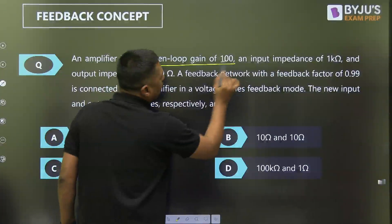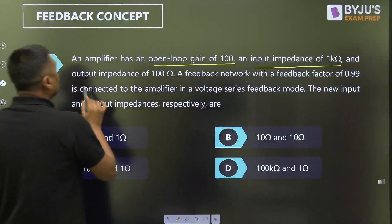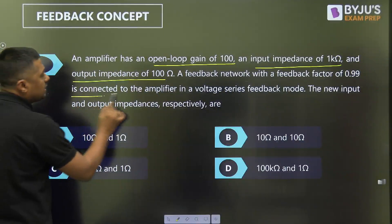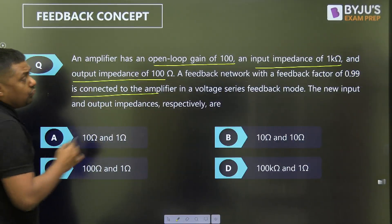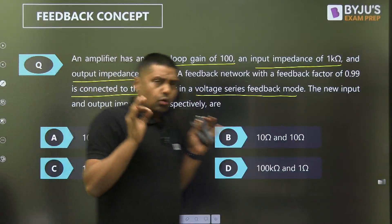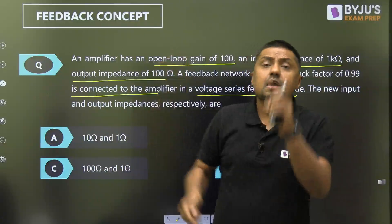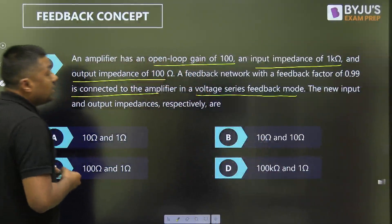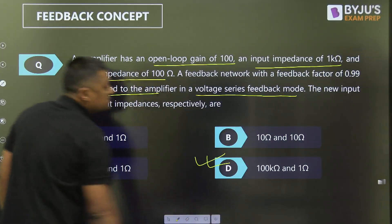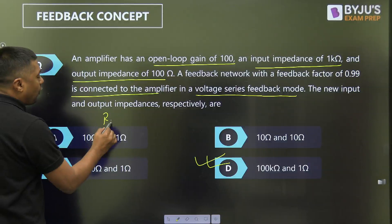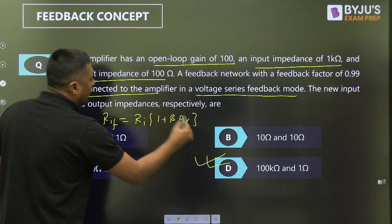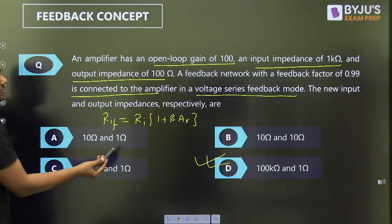Next question: an open loop voltage gain of 100, input impedance of 1 kΩ, output impedance of 100 Ω, and feedback network factor β = 0.99 is connected in voltage series feedback mode. Find the new input and output impedance. In voltage series feedback, input resistance increases and output resistance decreases. Check the answer — in which case is input resistance more than 1 kΩ? Only one case. You can also use the formulas: RIF = RI × (1 + β·AV) and R0F = R0 / (1 + β·AV).